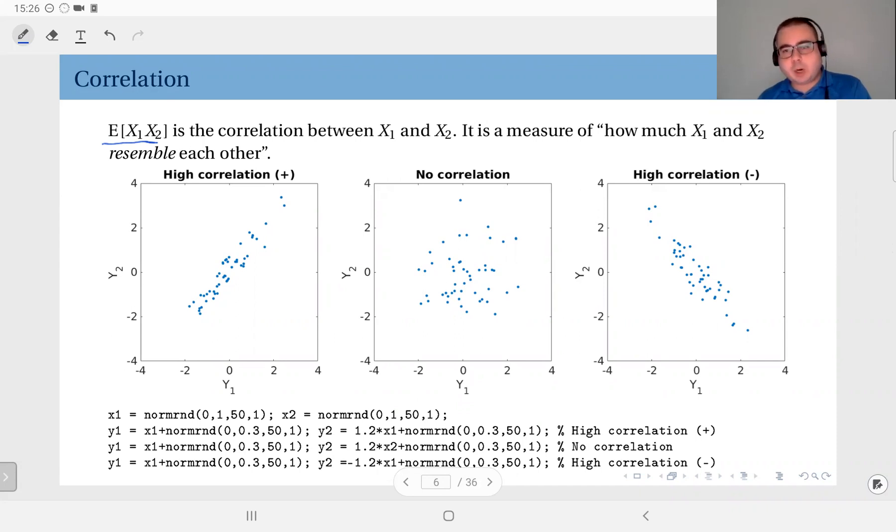We call this the correlation between X1 and X2. We say that it's a measure of how much X1 and X2 resemble each other. This is maybe not straightforward to understand immediately because we are not talking really about specific outcomes, but the distribution in general.